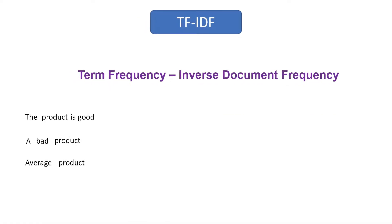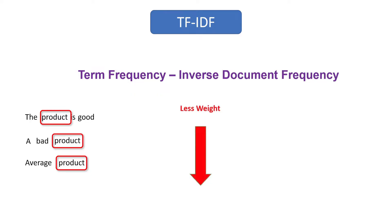For example, if you look at the word 'product' which occurred in all three sentences, it occurs more frequently, so it should get less weightage. Whereas words like 'good', 'bad', and 'average' occur less frequently, which means these words should get high weightage. This is the idea behind term frequency and inverse document frequency.